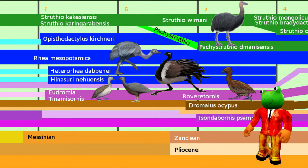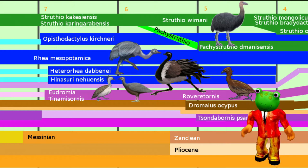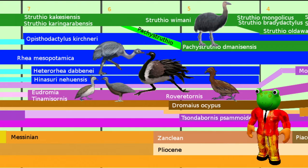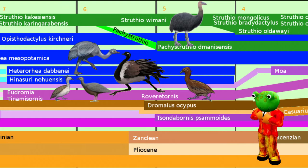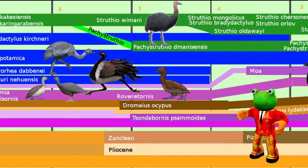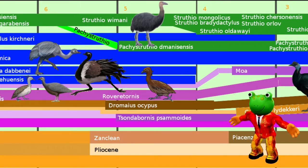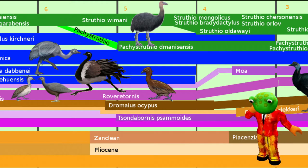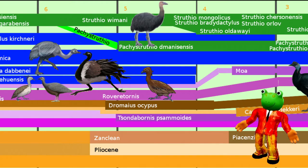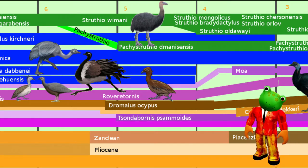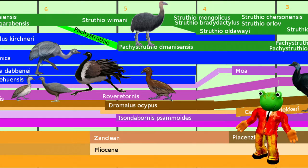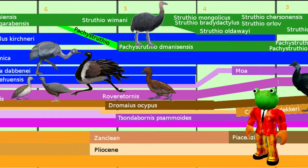A new group of ostriches emerged in the beginning of the Pliocene, about 5 million years ago. The name of the group is Pachystruthio — the Greek word meaning a fat ostrich. Especially the Pachystruthio dmanisensis discovered in 2019, who lived on Crimea, was a very heavy giant. With a height of 3.5 metres and a weight of 350 kg, this creature was impressive. The three species of Pachystruthio lived in Eastern Europe and were the largest birds of the Northern Hemisphere.